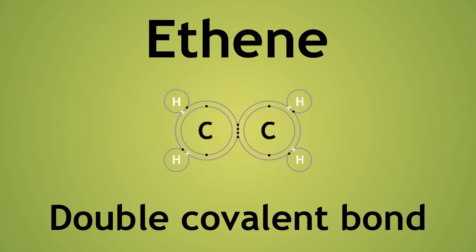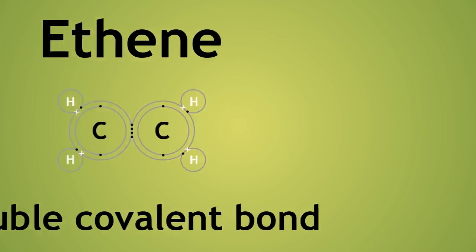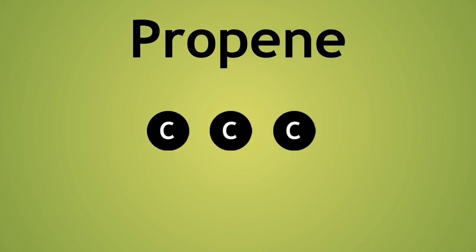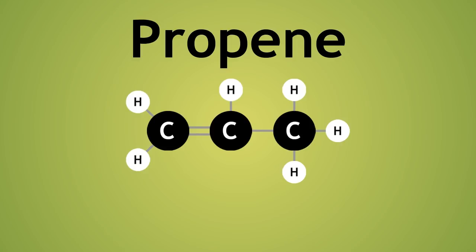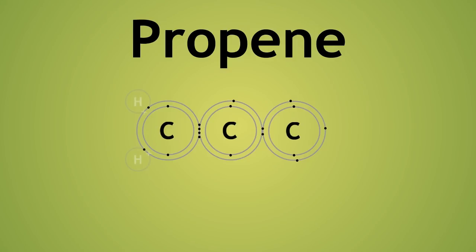You are only likely to come across alkene molecules with just one double bond, although there can be more within a molecule. The next molecule in the series is propene. As before, there is a double covalent bond between 2 of the carbon atoms, but the other is just a single bond. We now need to fill the molecule with hydrogen atoms to ensure that each carbon has a total of 4 bonds. 2 hydrogen atoms are required at this end of the molecule. This middle carbon already has 3 bonds and so requires just 1 hydrogen, and at this end, carbon has only 1 bond and therefore needs 3 more hydrogens.